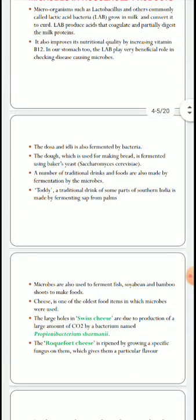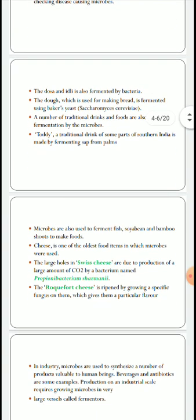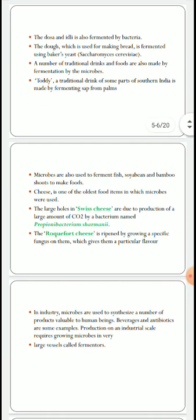The dough which is used for making bread is fermented using bakery yeast, that is Saccharomyces cerevisiae. A number of traditional drinks and foods are also made by fermentation by microbes. Toddy, a traditional drink of some parts of southern India, is made by fermenting sap from palms. Microbes are also used to ferment fish, soya bean, and bamboo shoots to make foods.